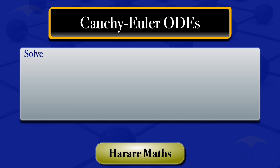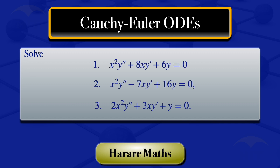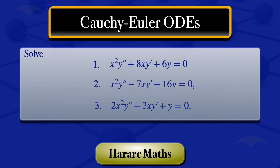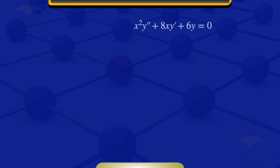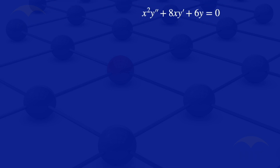In this video, I'm going to solve second-order ordinary differential equations. I'll start by looking at the first one: x squared multiplied by y double prime plus 8x times y prime plus 6y equals 0.